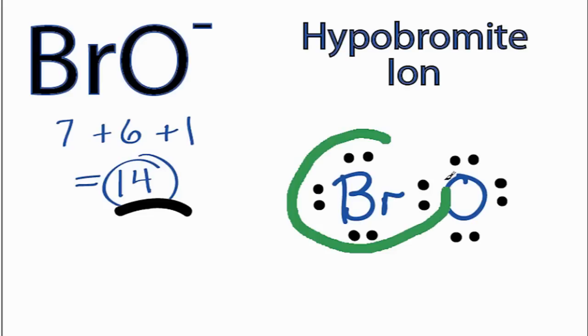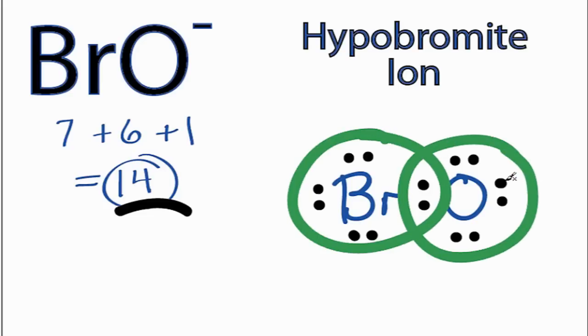The Bromine has 8 valence electrons, it has an octet, and the Oxygen also has an octet.